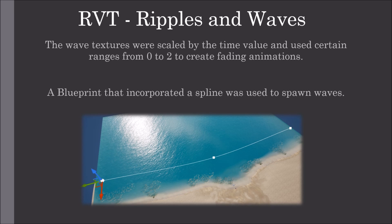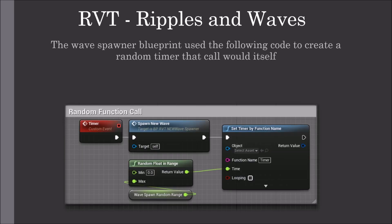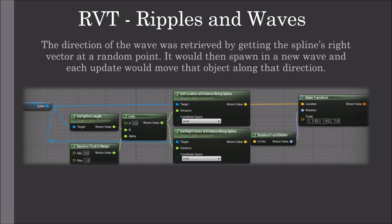A Blueprint incorporating a spline was used to spawn waves. The wave spawn Blueprint used a random timer that would call itself. The direction of the wave was retrieved by getting the spline's right vector at a random point, then it would spawn a new wave, and each update would move that object along the direction.